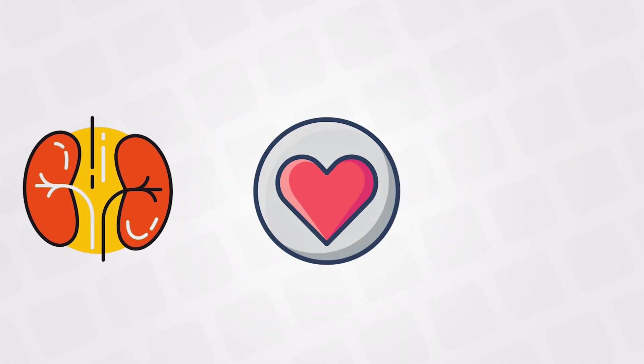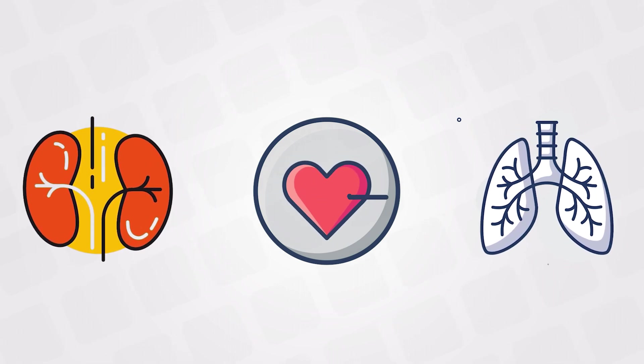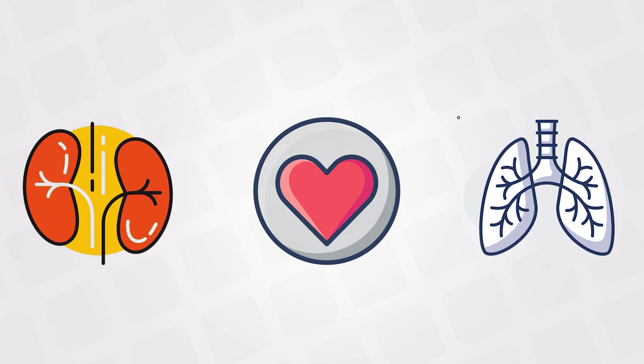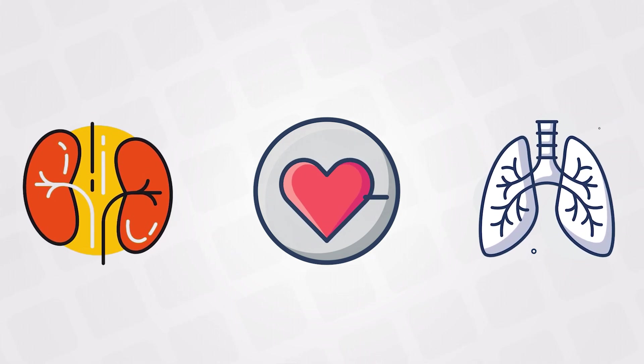It is called Autonomic because it has some automatic activities. Without our interference or consciousness, it can control the function of multiple organs in the body, like the heart rate, the digestion, the respiratory rate, and the pupillary reflexes.